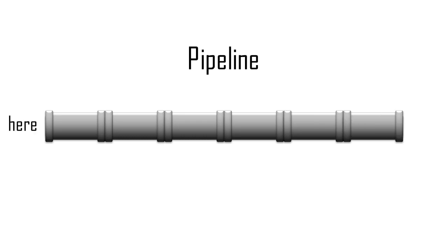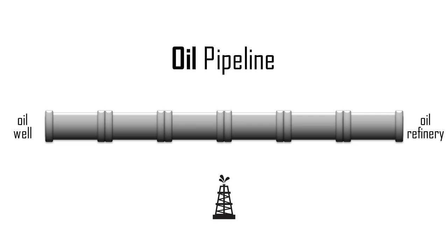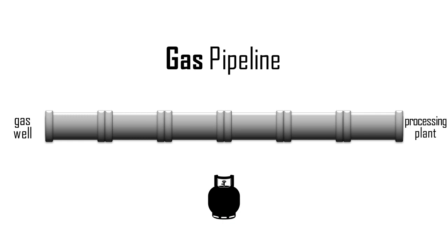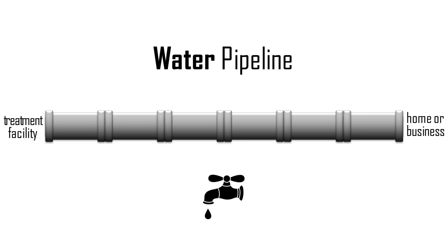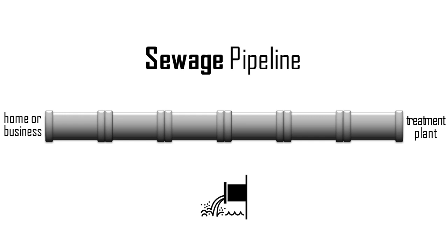A pipeline is a line of pipes used to transport an object from here to there. An oil pipeline transports crude oil from a well to a refinery. A gas pipeline transports natural gas from a well to a processing plant. A water pipeline transports drinking water from a treatment facility to a home or business. A sewage pipeline transports waste from a home or business to a treatment plant.